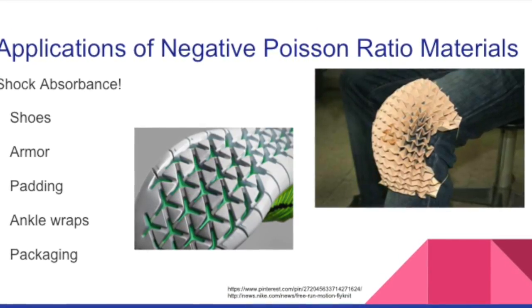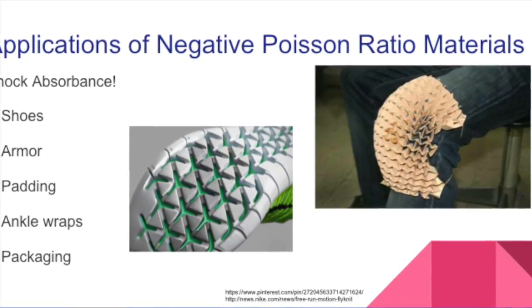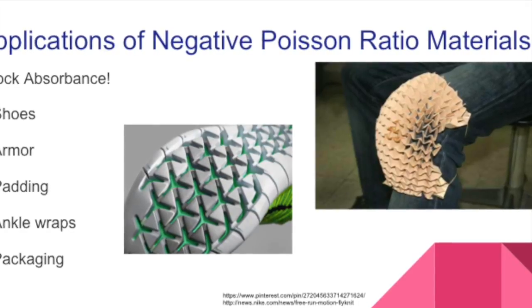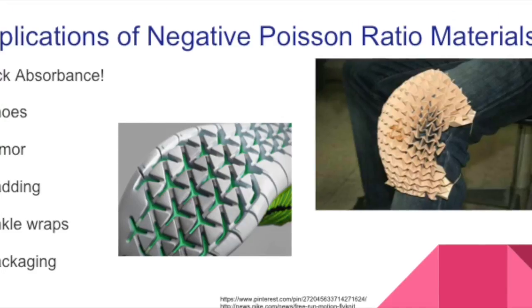As you can see in the picture, it conforms to the knee rather than bowing outwards. Negative Poisson's Ratio materials become more dense upon impact, which allows them to resist further deformation, making them useful for armor applications.